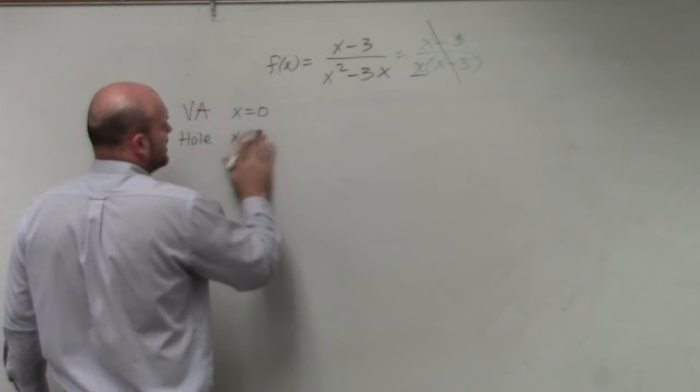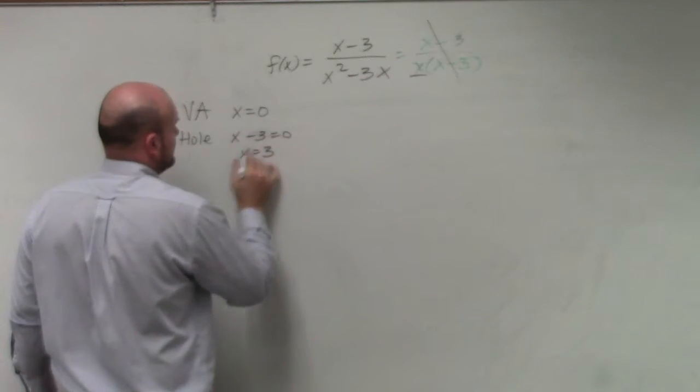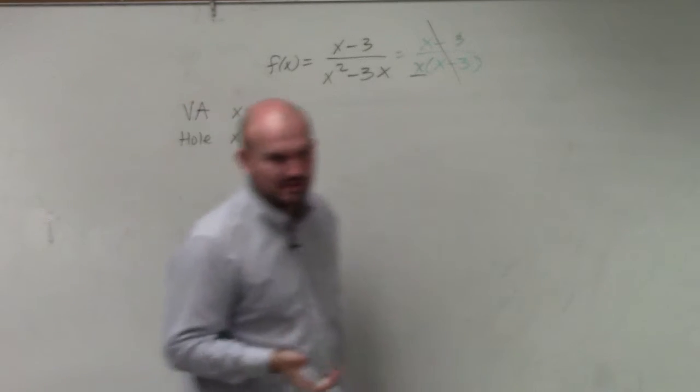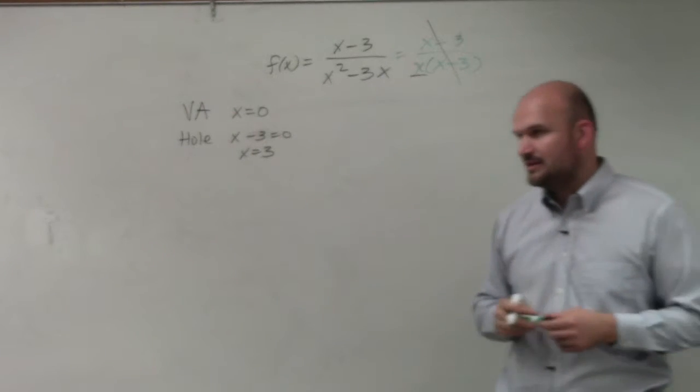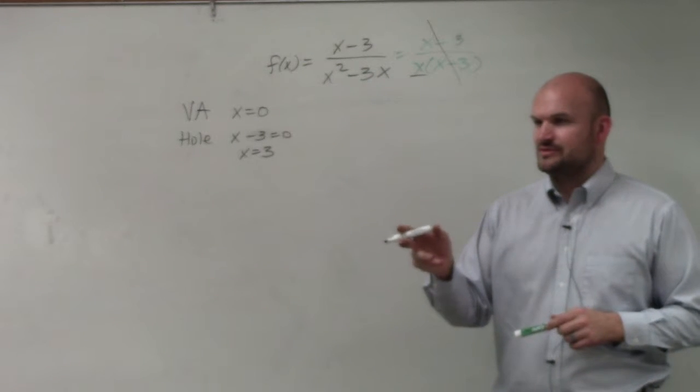So your vertical asymptote is x equals 0, and x minus 3, we'll just call the hole. So our hole is at x equals 3. So it's not an asymptote. Just be very careful with that. A lot of students will make that mistake. Are you writing this time? This is homework. I'm giving them free answers, right?